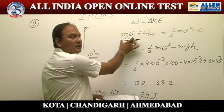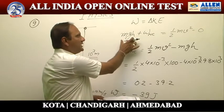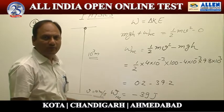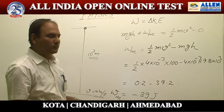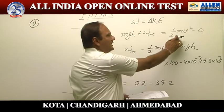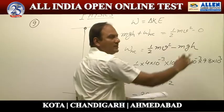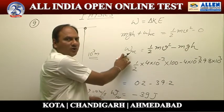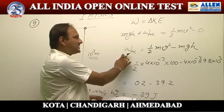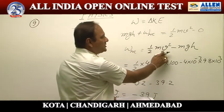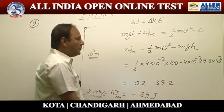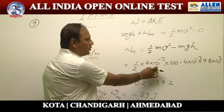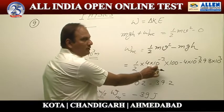Work done by gravitational force (mgh) plus work done by the non-conservative viscous force equals final kinetic energy (½mv²) minus initial kinetic energy (zero). On solving the equation, work done by viscous force equals ½mv² minus mgh.